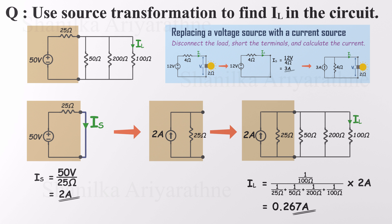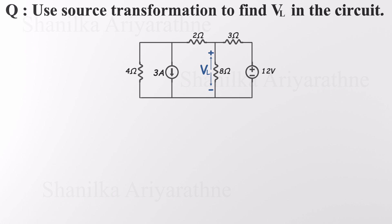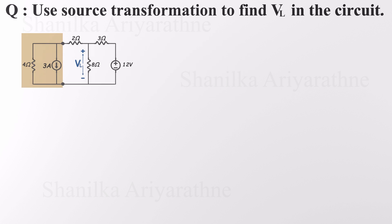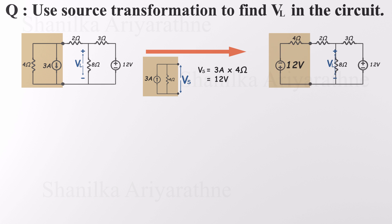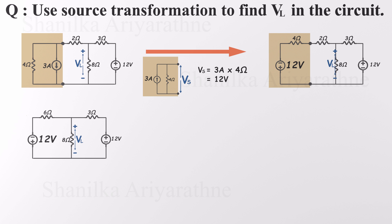Let's go through another example. We're asked to find VL, the voltage across the 8 ohm resistor. This circuit has two power sources — one voltage source and one current source — and you have to be careful about choosing the right parts of the circuit to transform. Let's start with the current source that has a 4 ohm resistor in parallel, and transform it into an equivalent voltage source. We disconnect the rest of the circuit, leave the terminals open, and calculate the voltage: current times resistance gives 12 volts. So now we have a 12 volt voltage source in series with a 4 ohm resistor. This new branch is connected in series with another 2 ohm resistor, so we simply add them up: 4 plus 2 equals 6 ohms total.